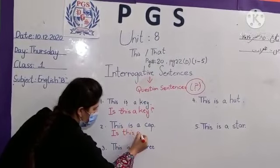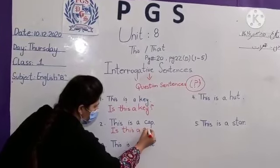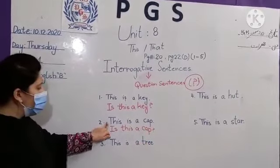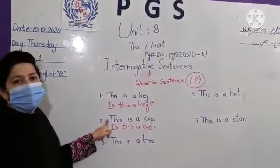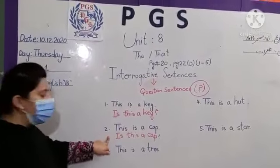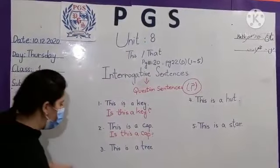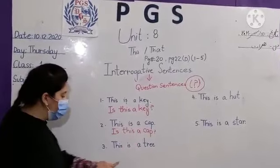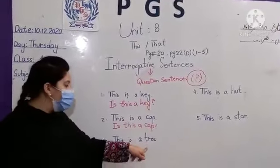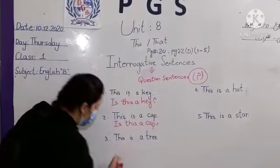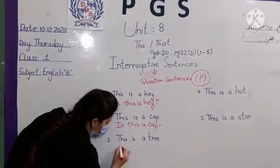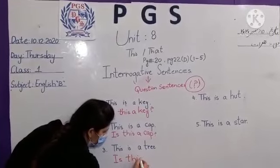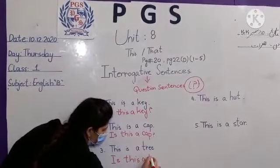Next example: 'This is a gap.' Simple sentence — in Urdu, 'yeh ek topi hai.' How to change it? 'Is this a gap?' Next: 'This is a tree.' Tree means 'yeh ek darakht hai.' How to change it? 'Is this a tree?'